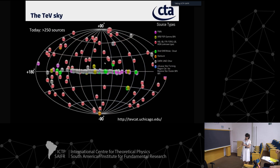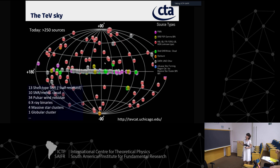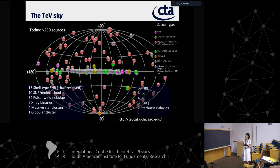Nowadays the TeV sky is like this. You see galactic sources and extragalactic ones. The galactic sources are supernova remnants, pulsar wind nebulae, X-ray binaries, and massive star clusters, and the extragalactic ones are essentially active galactic nuclei and starburst galaxies.